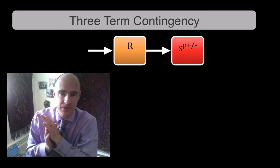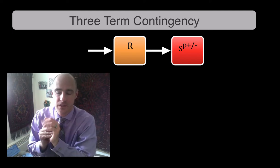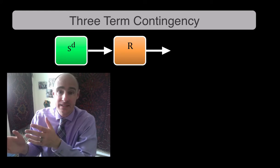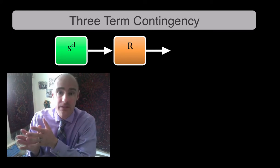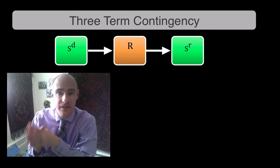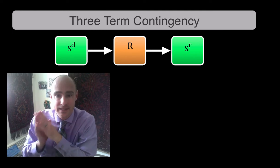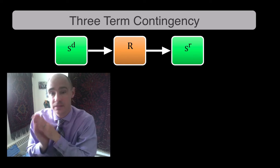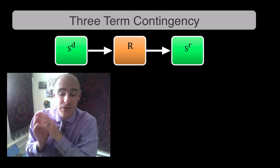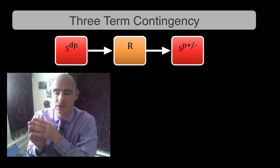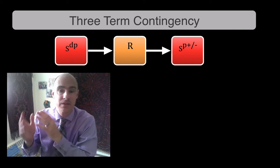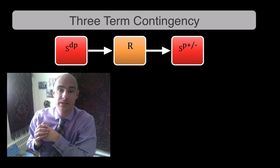But let's move back to the first term, because there's some variations on the SD that we want to talk about. An SD signals to the organism that a reinforcer is available in that context at that time for a particular response. That's what the SD signals. So the SD is about signaling a reinforcer. You could also have an SDP, right? A discriminative stimulus that signals that punishment is coming. You could have that.